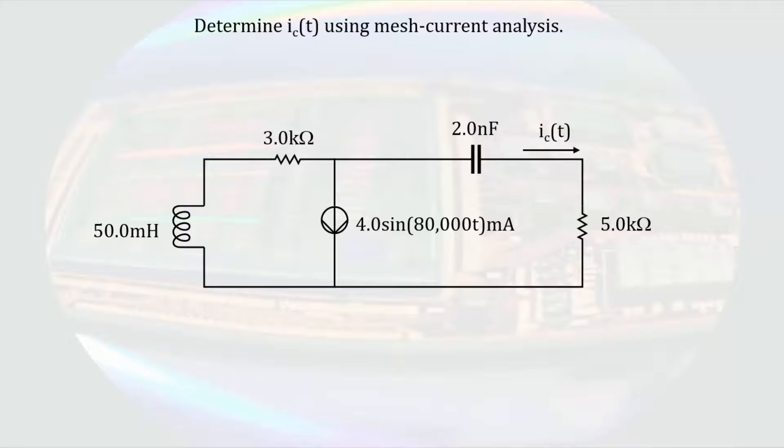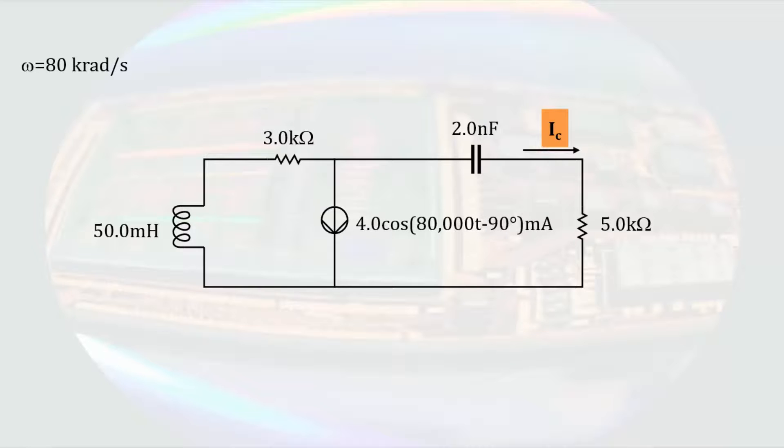The time-varying current can be written as a phasor current. The current source in this problem is given in terms of the sine function. If you remember back to when we first talked about the phasor diagram, we call the positive x-axis zero degrees. For consistency's sake, we generally solve the phasor diagrams with cosine of zero on the positive x-axis. So we will convert the sine function to cosine before converting to the phasor domain. Writing the angular frequency off to the side, we can write the current source as 4e to the j minus 90 degrees milliamps.